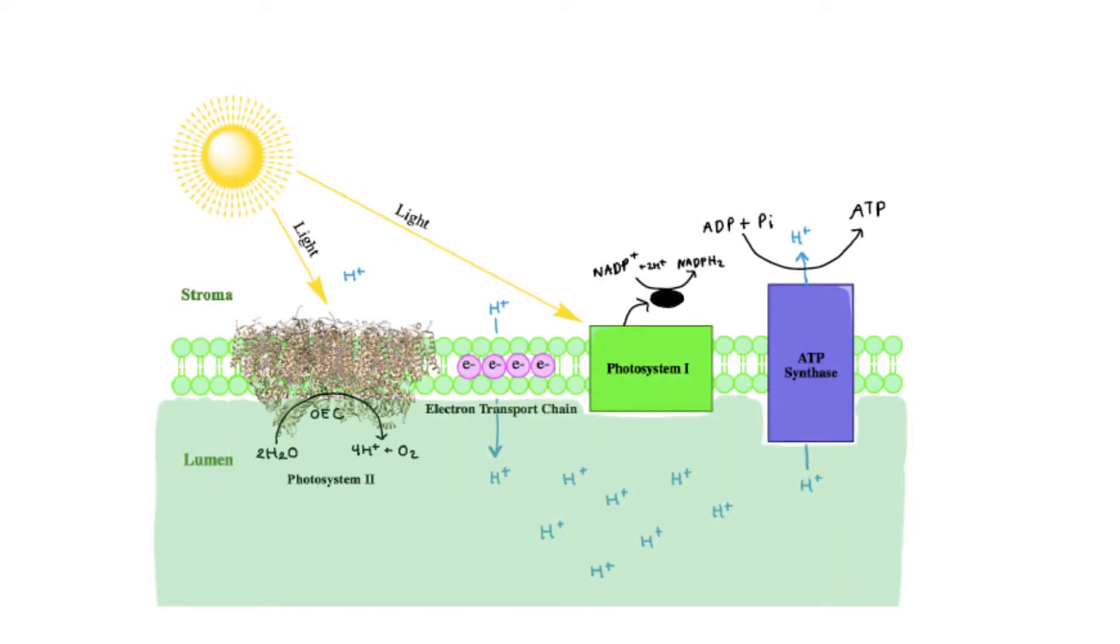The electrons are used to pump the hydrogen ions across the membrane and are transferred through the electron transport chain to photosystem 1. The final fate of the hydrogen ions is to power up ATP synthesis and the final fate of electrons is to be placed on a carrier molecule, NADPH.